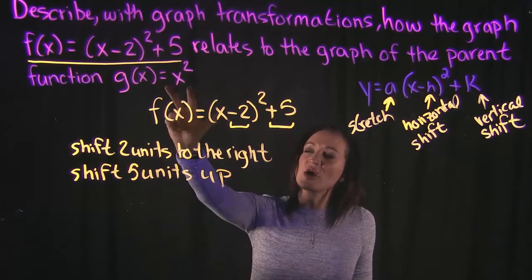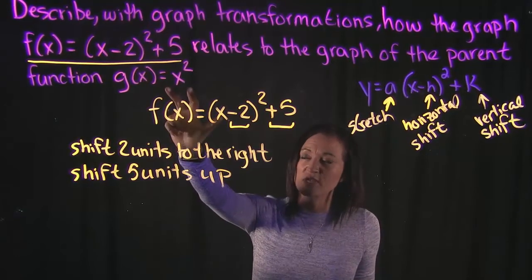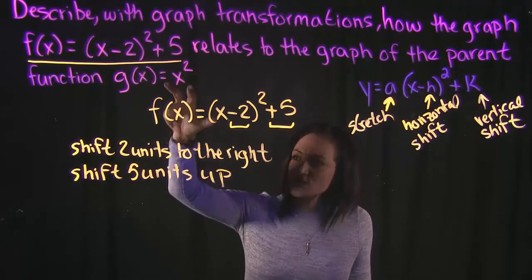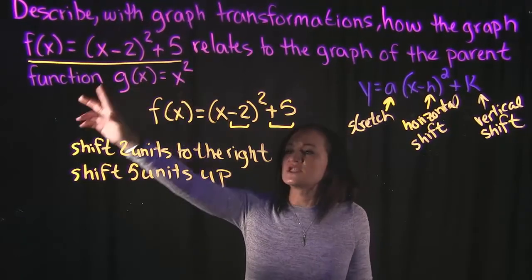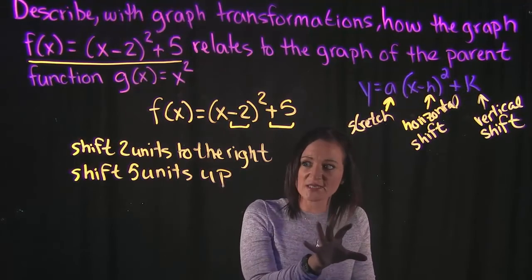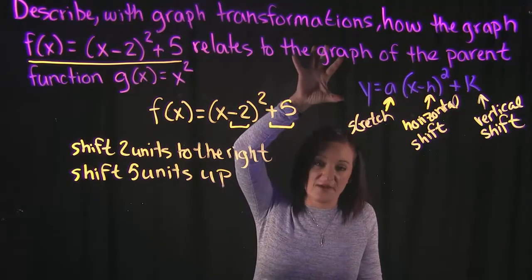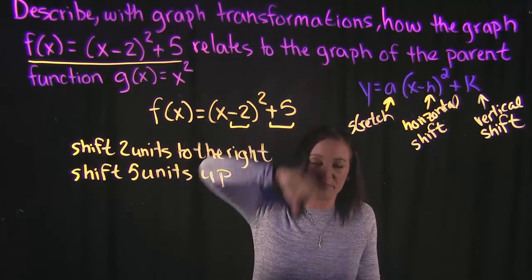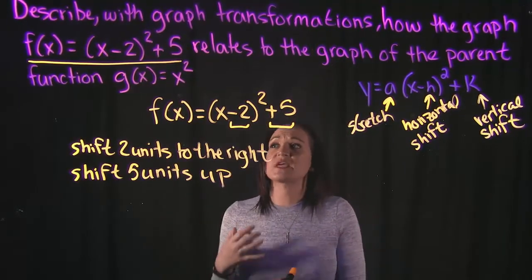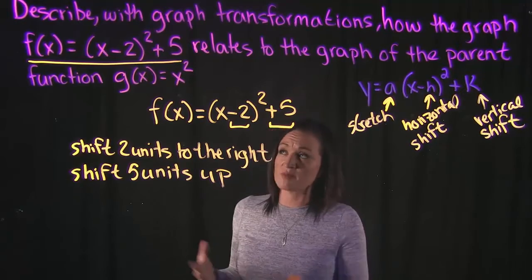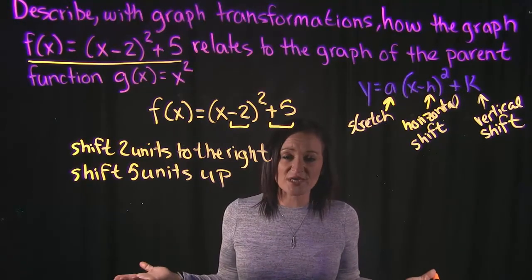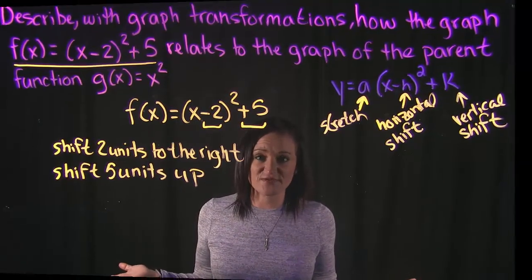So if we know what x squared looks like, we would take that graph and shift it 2 units to the right and 5 units up. That's the transformation going on between these two graphs. That's it for this video.